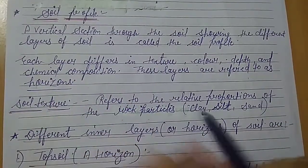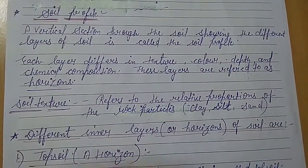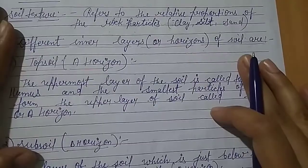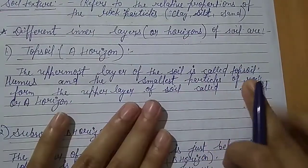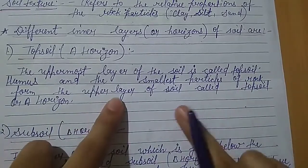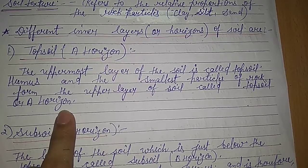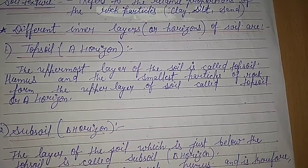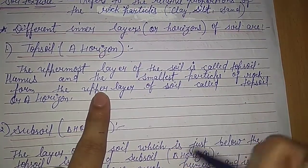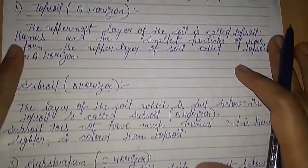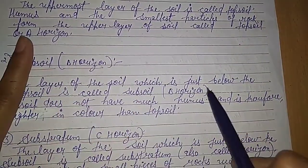The first layer is topsoil. The uppermost layer of soil is called topsoil or A horizon. Humus and the smallest particles of rock form the upper layer of soil called the topsoil. The color of the topsoil layer is dark brown because of the presence of humus in a large amount, as humus provides a dark brown color to the soil.